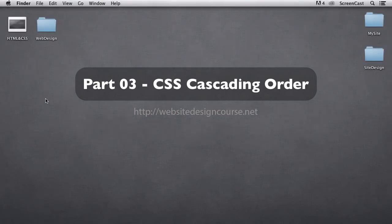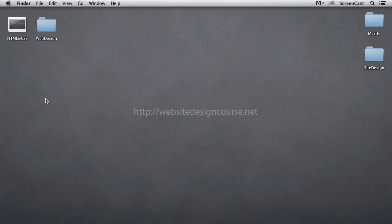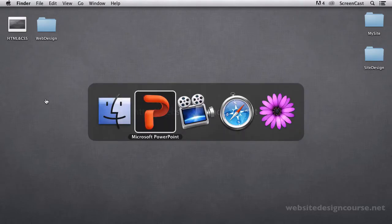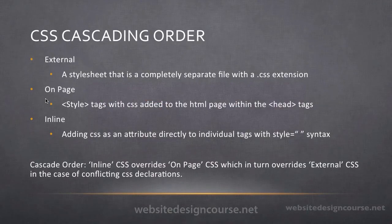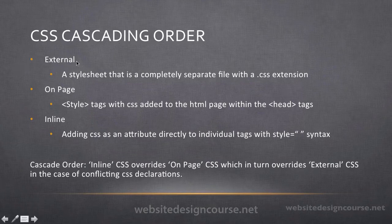We're going to look at what we call the cascading order of CSS and also introduce the available spots within an HTML document where you're allowed to add CSS. In a typical CSS manner, you're allowed to add CSS to an HTML document in one of three spots, the first being external.